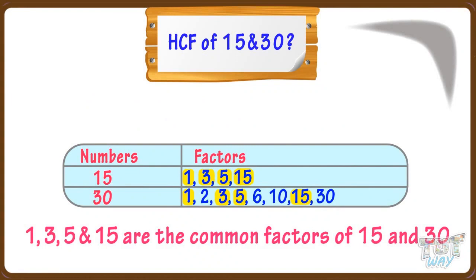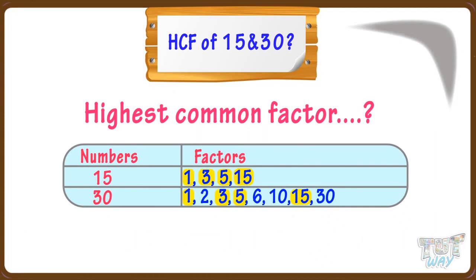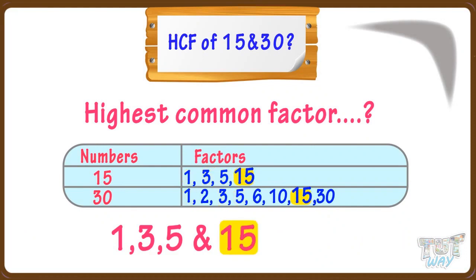And what do we have to find? We have to find the highest common factor — that is, the biggest number out of the common factors. The biggest number out of 1, 3, 5, and 15 is 15. So the HCF of 15 and 30 is 15.